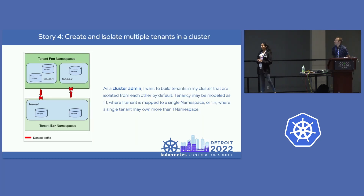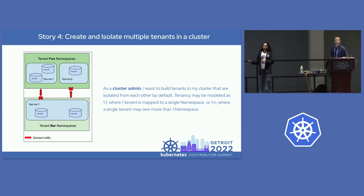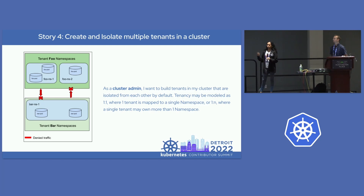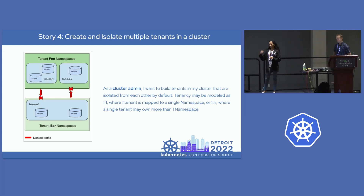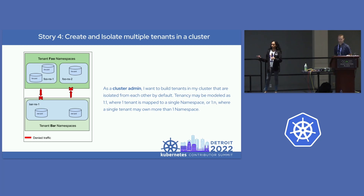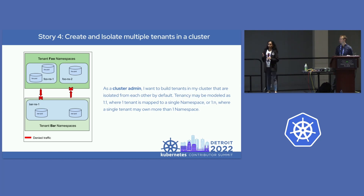The fourth user story is tenant isolation. A tenant could be a single namespace or a group of namespaces, and you want to say that this tenant should not talk to that tenant — or no tenants should talk to each other unless explicitly allowed by the tenants themselves. We can use deny rules similar to user story one to deny traffic between tenants.